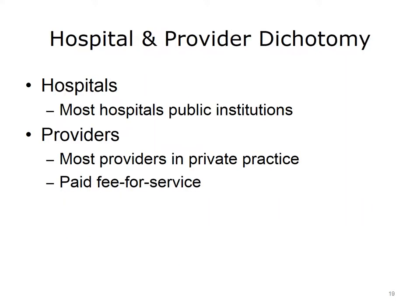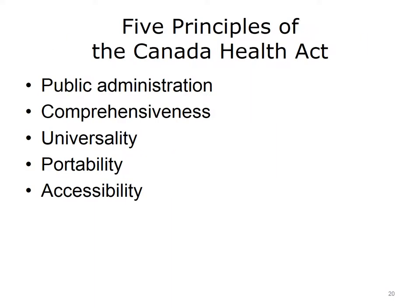The Canada Health Act uses public funds to pay health care providers who generally are in private practice. Most hospitals in Canada are public institutions funded through the provincial or territorial health programs. At the same time, the Canada Health Act uses public funds to pay health care providers who are mostly in private practice on a fee-for-service basis. The Canada Health Act of 1984 includes five principles that govern provinces and territories if they want to receive federal funding for their health care plans. These principles are public administration, comprehensiveness, universality, portability, and accessibility.